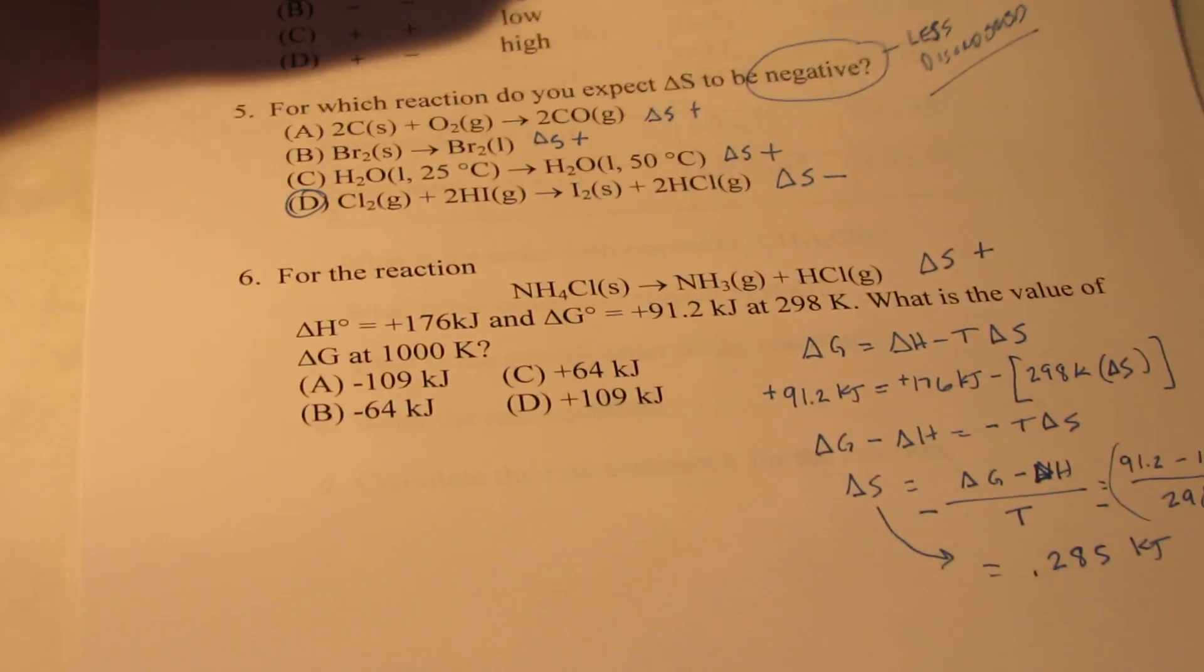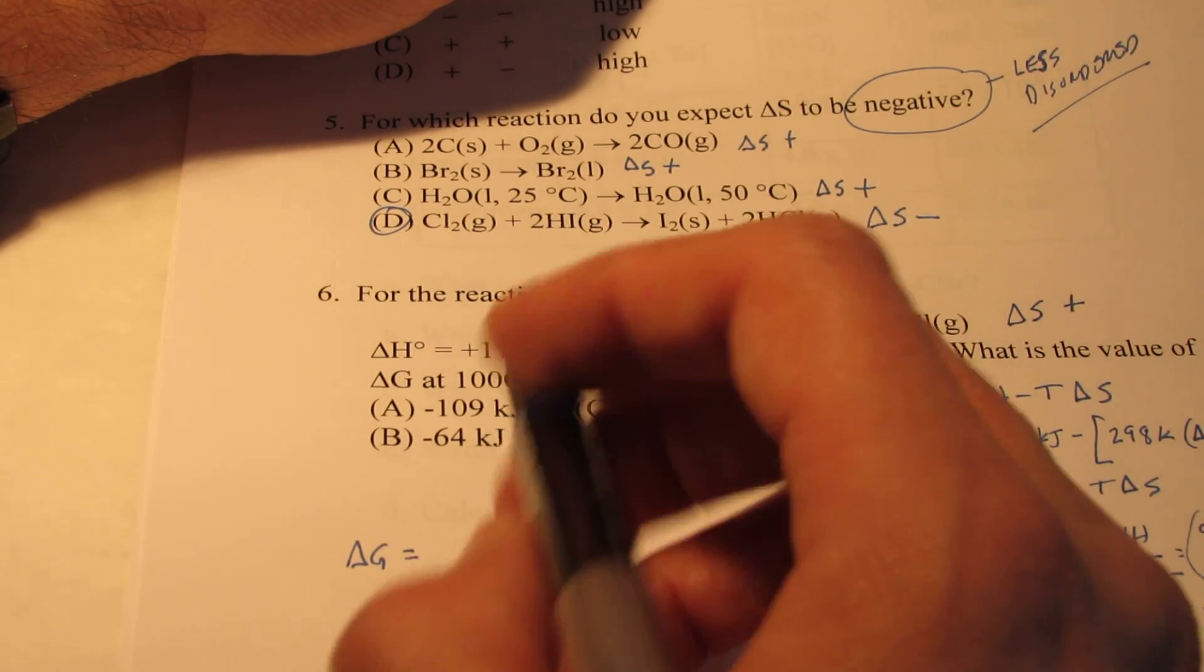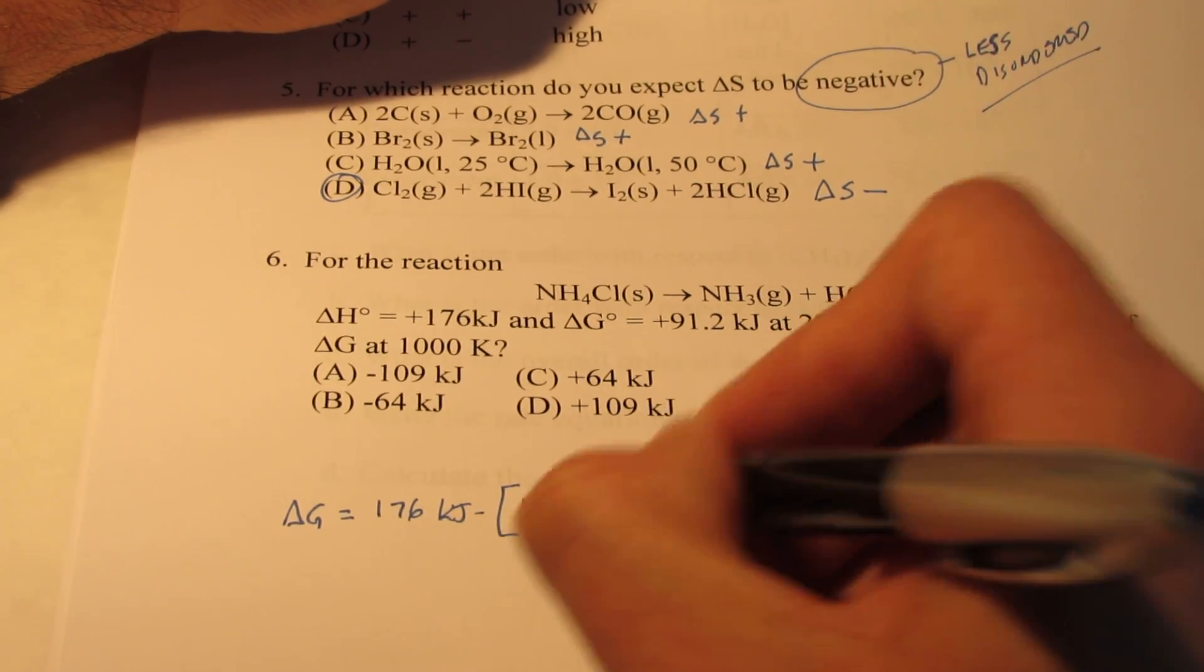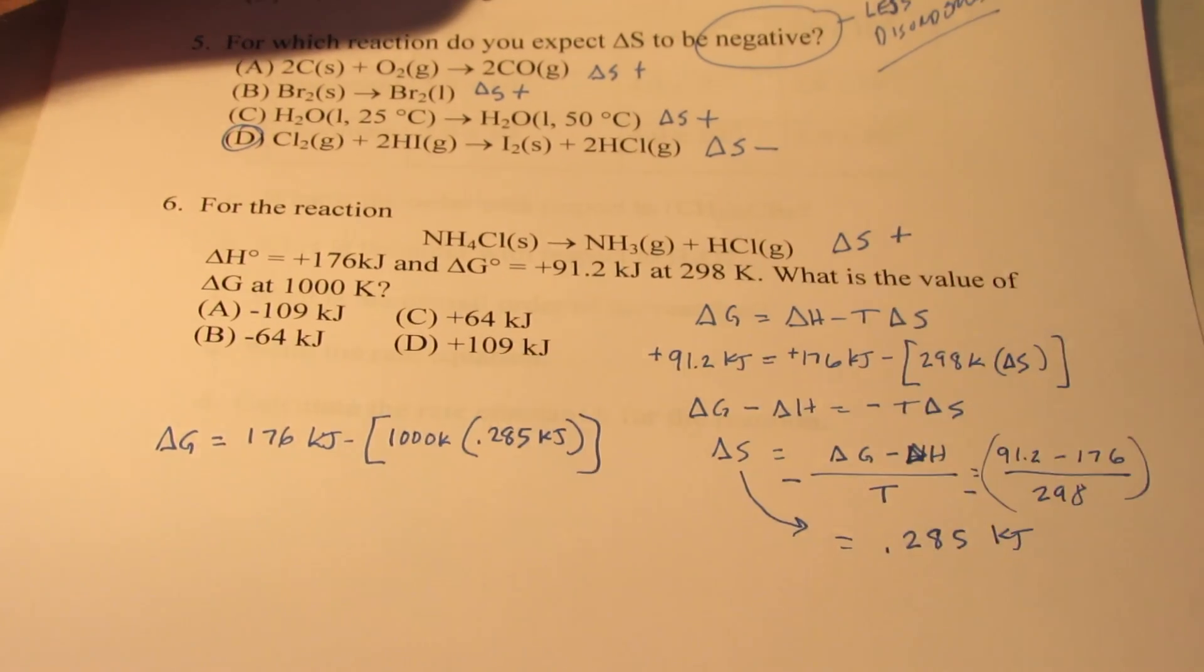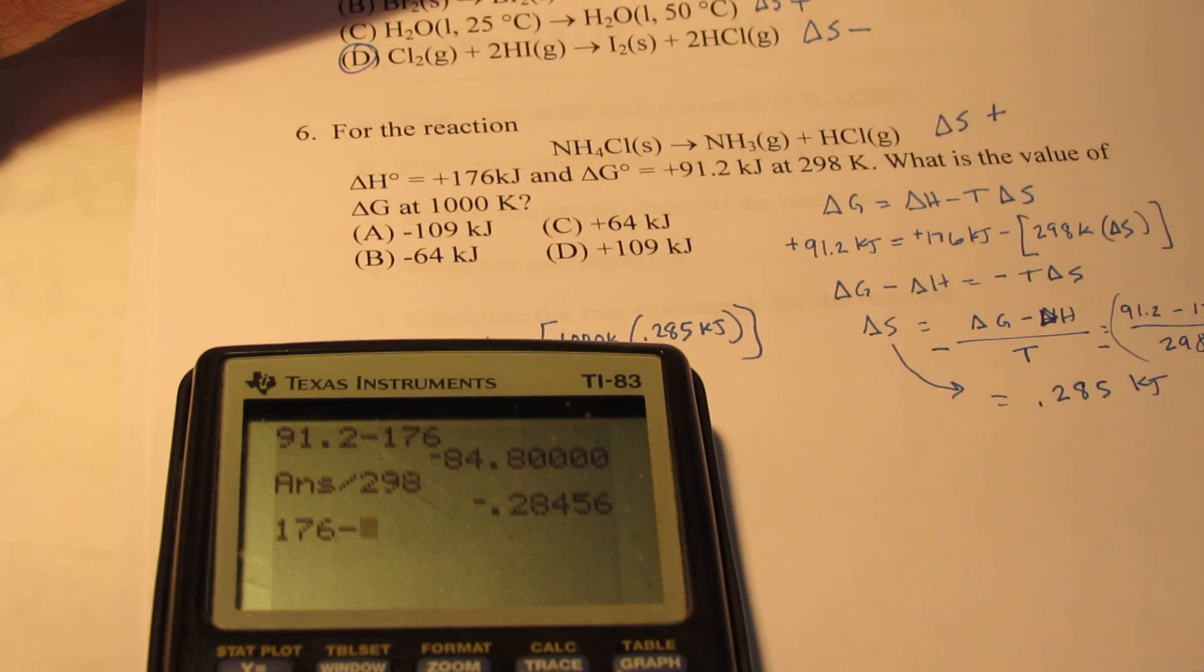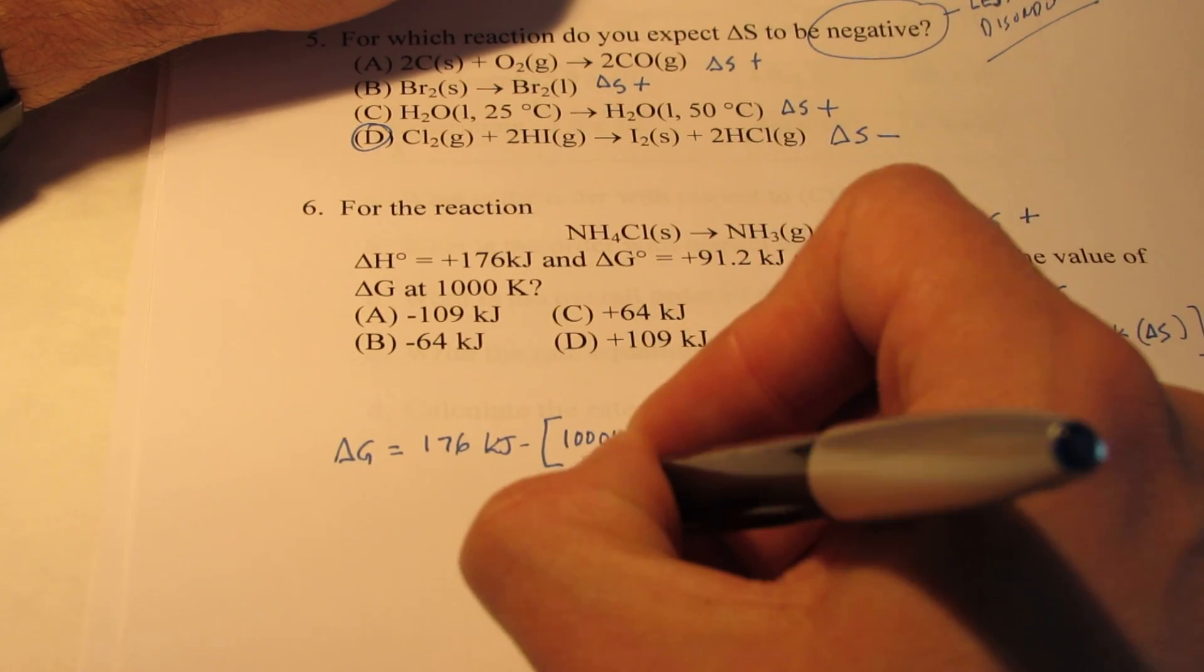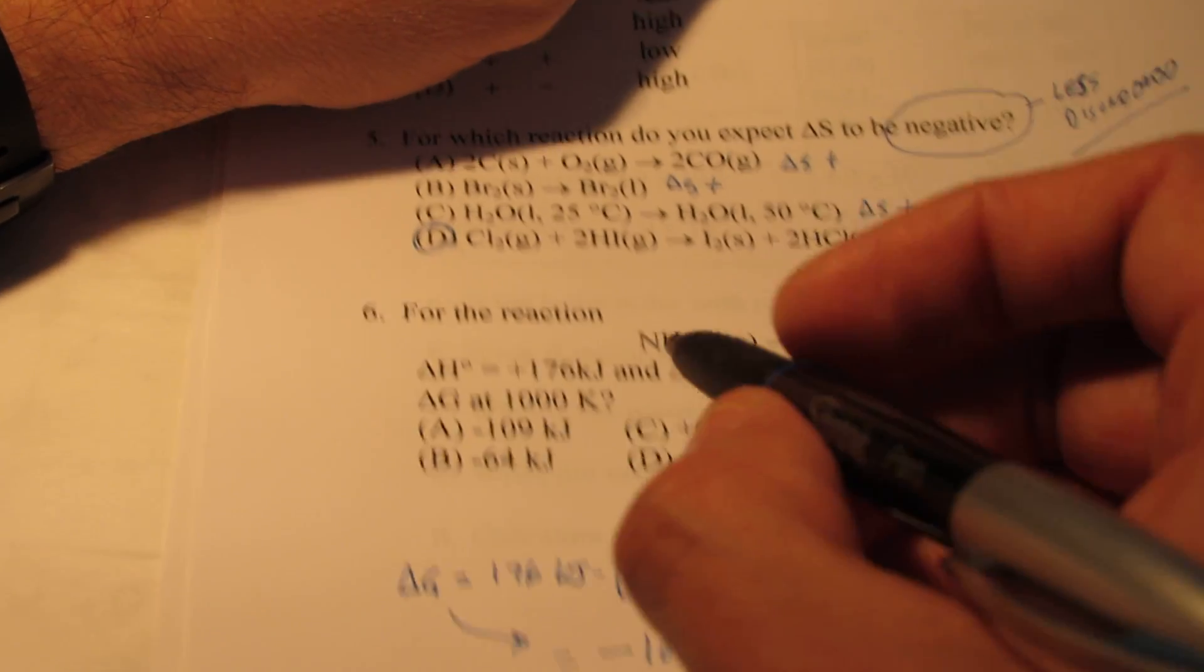So we're going to find a new Delta G here. Our new Delta G, this will be at the high temperature, will be Delta H, which is still 176 kilojoules, minus my new temperature. So I want to find the value at 1000 Kelvin, times my Delta S, which I just solved for, which is 0.285 kilojoules. So let's plug and chug and see what we get. 176 minus 1000 times 0.285, close off the parentheses, equals a negative 109. So my Delta G, sure enough, it does become negative at a higher temperature. So my answer is letter A.